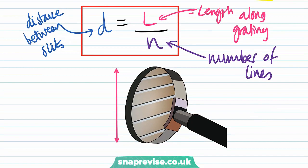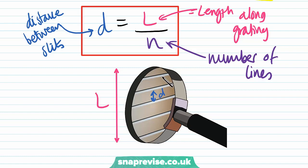L is the total length of the grating, D is the grating spacing — the distance between each slit — and N is the number of lines or slits in the grating.